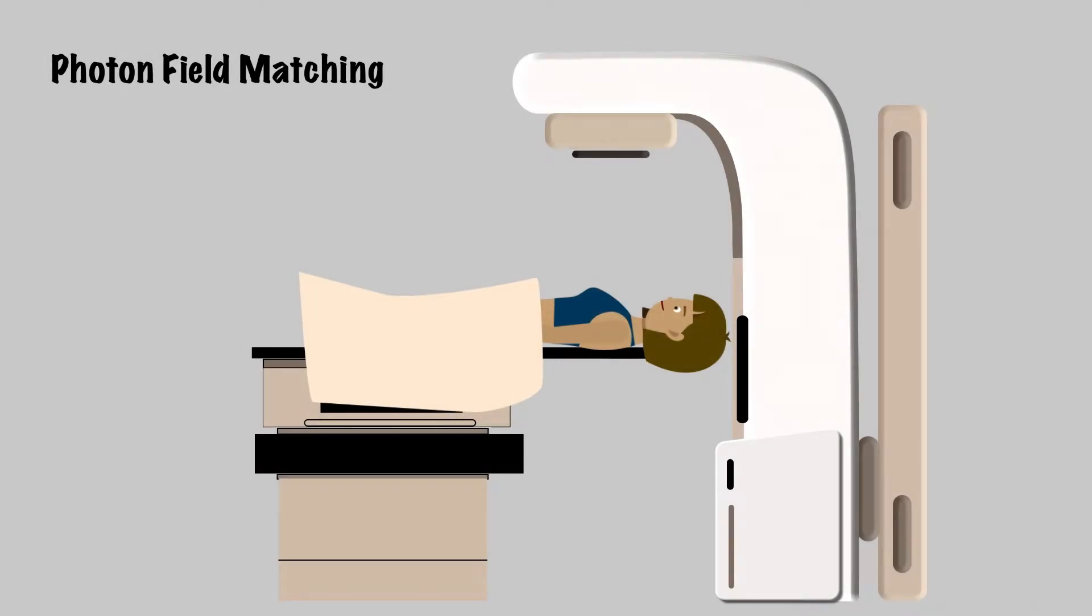There are a number of reasons you might want to combine two therapy beams adjacent to each other. You could be treating a long target requiring greater than 40 square centimeters, or you could be treating sites that are next to each other but need to be treated with different techniques.